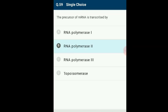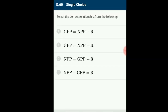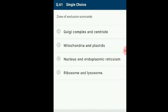Question number 60: Select the correct relationship. Net primary productivity (NPP) amount is obtained when respiration amount is removed from gross primary productivity (GPP); hence NPP = GPP − R, therefore GPP = NPP + R. The correct option is option B: GPP = NPP + R.